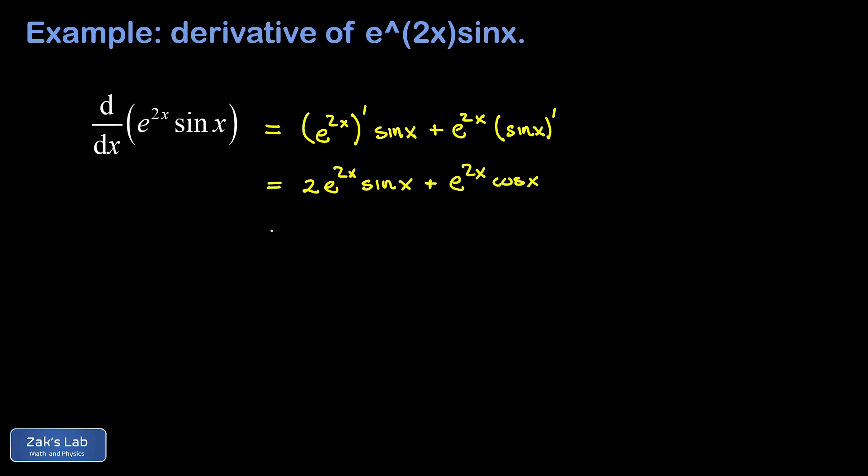Now that's a fine way to leave the answer, but I do notice that we could factor an e to the 2x out of this thing, and it might look a little nicer that way. So we have e to the 2x times 2 sine x plus cosine x, and we're done.